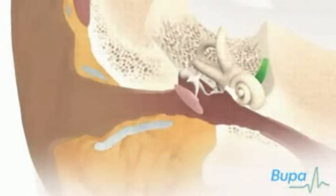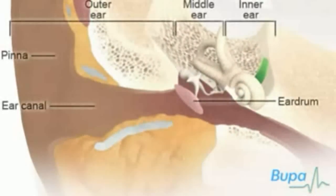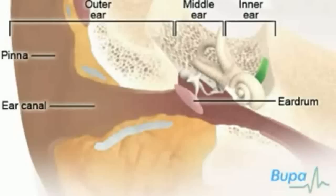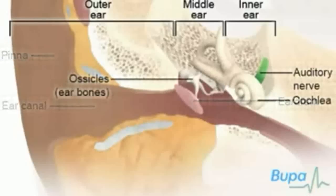Your ear consists of three parts: the outer ear, the middle ear and the inner ear. These all work together to pass sound through your ear and to your brain.